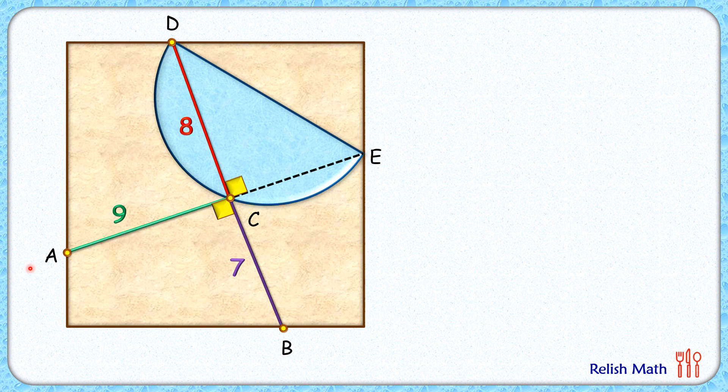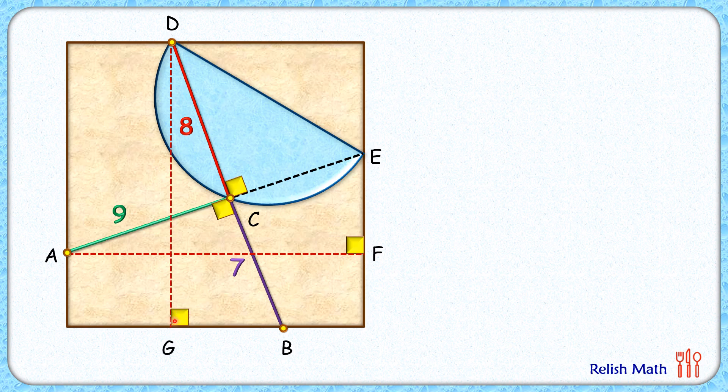Now from point A, let's draw a parallel line to the horizontal side of the square, and from point D let's draw a vertical line parallel to the side of the square. Let's assume this angle here as alpha degrees and this angle as beta degrees.